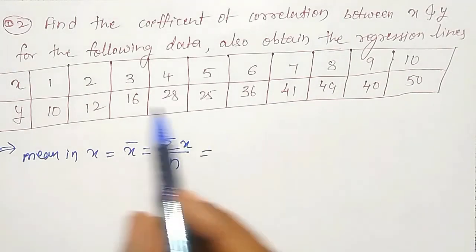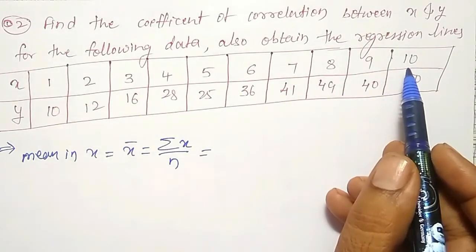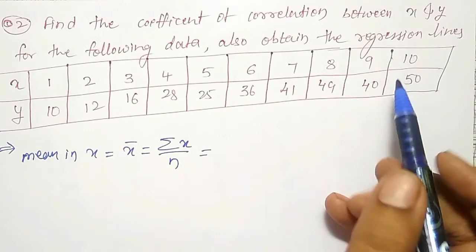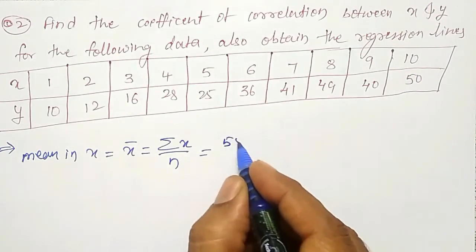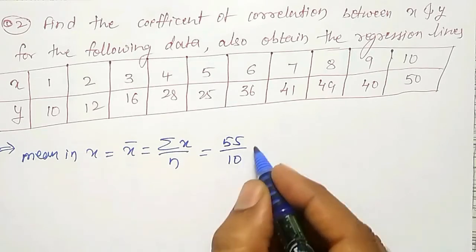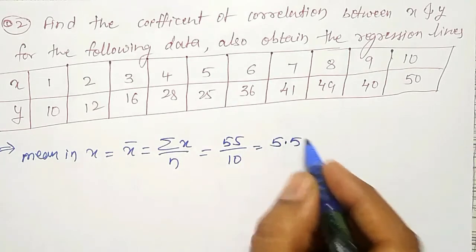Sum of x values: 1, 2, 3, up to 10, we will get 55. Divided by 10 observations, I will get x-bar equal to 5.5.